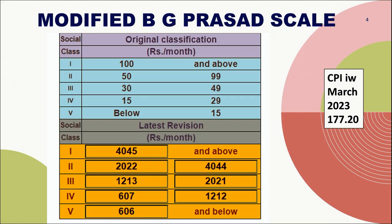The most commonly used scale is the modified BG Prasad classification, which can be used for both urban and rural settings. It is based on per capita income of the family. The original classification has certain cutoff levels, and there is a latest revision based on the Consumer Price Index of March 2023. Based on revised cutoffs, socioeconomic class is divided into class 1 through 5, where class 1 is the topmost and class 5 is the lowermost.